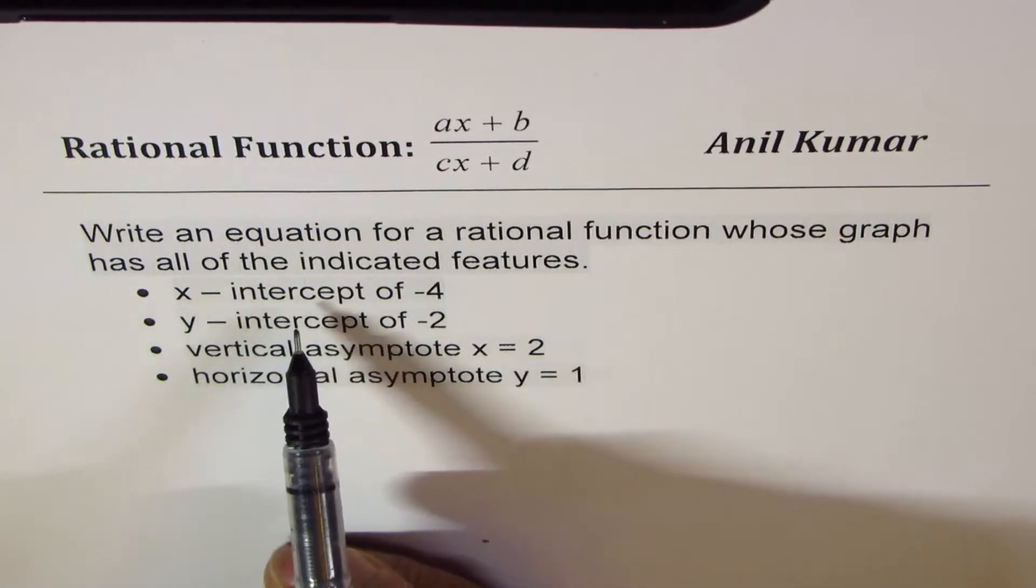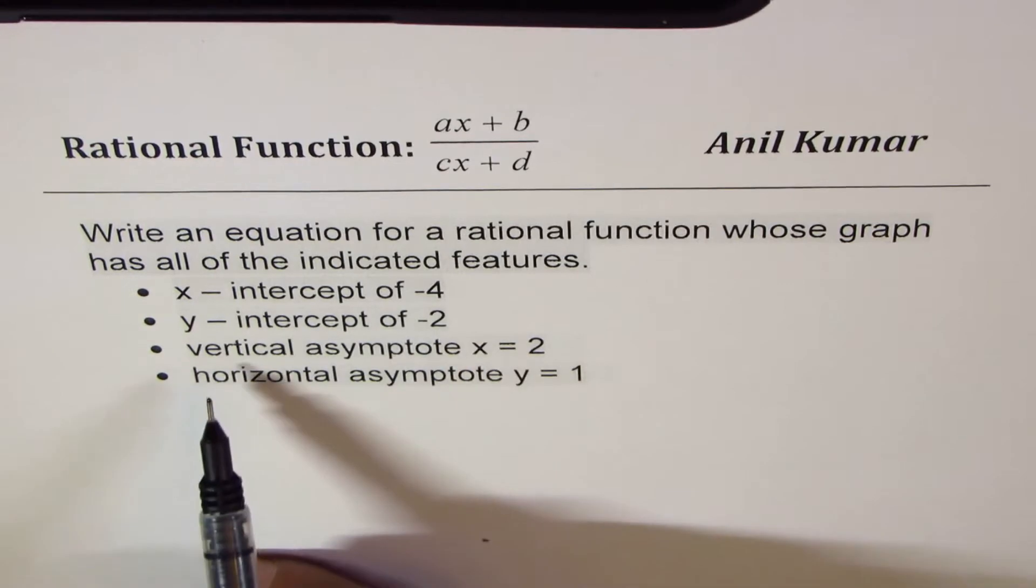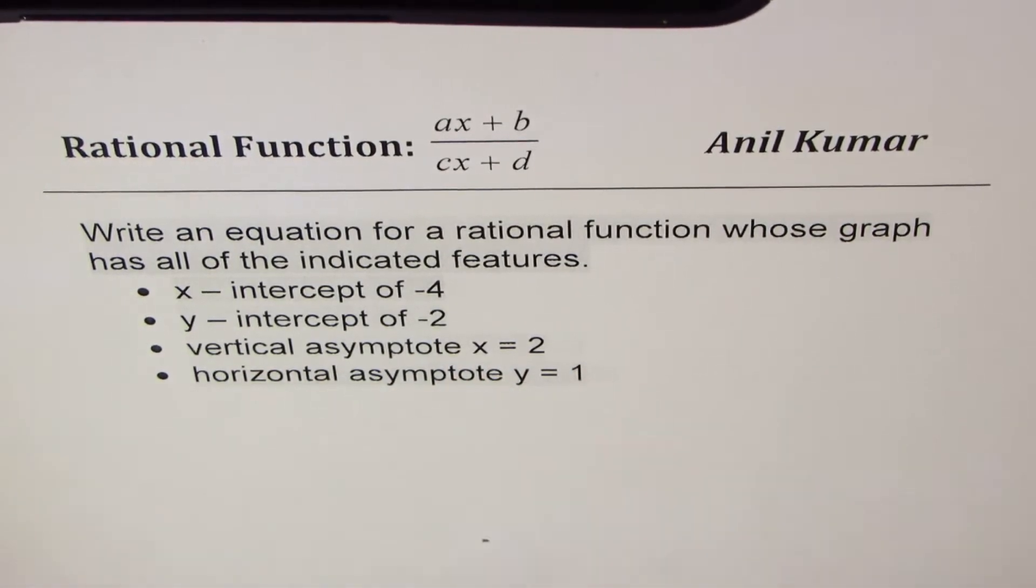Now here we have x intercept of minus 4, y intercept of minus 2, vertical asymptote x equals to 2, horizontal asymptote y equals to 1. Let's try to understand this equation.